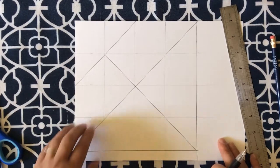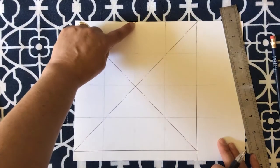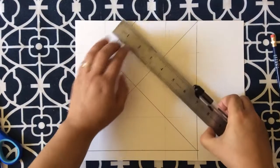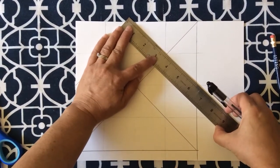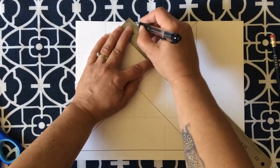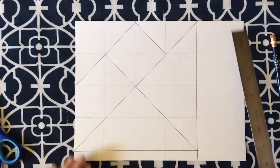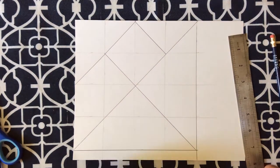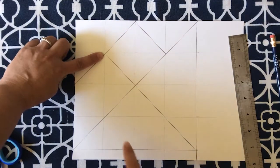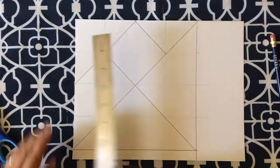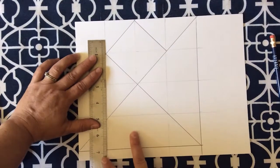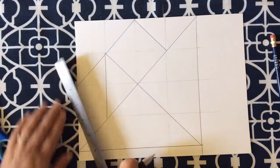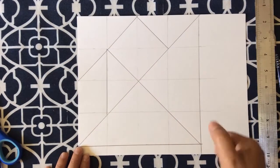There's only two more lines. Line number four is going to go from here to here. There we go. That made a little square. Now our last line. Line number five is going to go from here to here. So there, down to this line here. And there you go. That's all your lines.